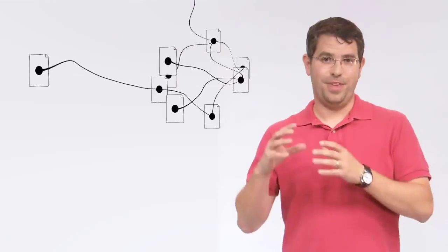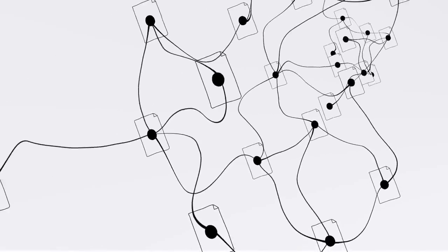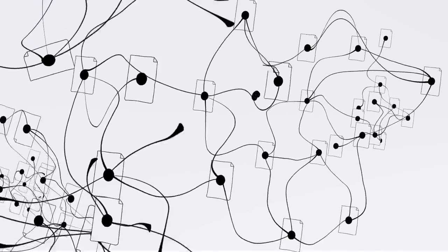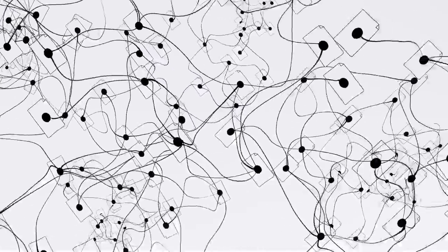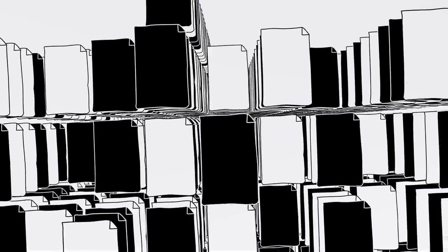We do this with software programs called spiders. Spiders start by fetching a few web pages, then they follow the links on those pages and fetch the pages they point to, and follow all the links on those pages, and fetch the pages they link to, and so on, until we've indexed a pretty big chunk of the web—many billions of pages stored across thousands of machines.